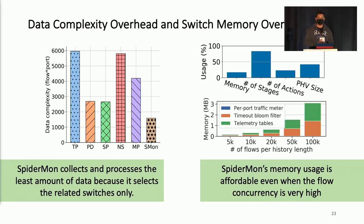For the complexity of collected data, we use the number of flows times the number of ports involved in the collection as data complexity. We can see that Spider-Man collects the least amount of data because it only selects the related switches.